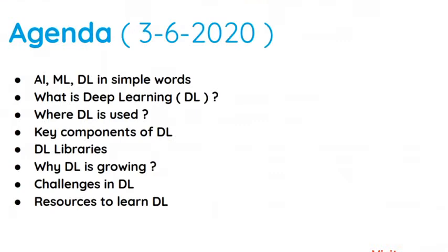So what we would be discussing today: first, we will be exploring AI, ML, and deep learning in simple words — what these domains actually are. Then we will dive into the details of what deep learning actually is, its definition, and what things go into deep learning. After that, we will discuss the industry use cases — where deep learning is used in the industry — so that you get an idea of what you are learning and what the industry actually requires.